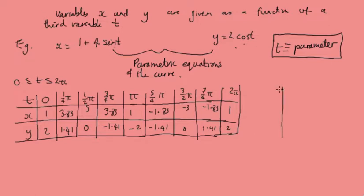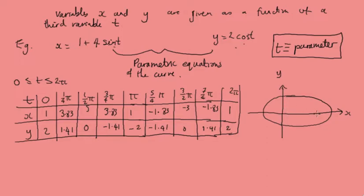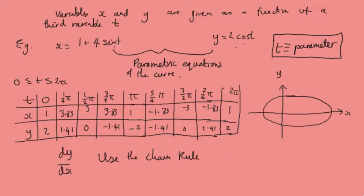Then you would have some proper graph paper and you would plot your values for x and y. If you were to do that, you would find you'd get an ellipse. That's how you would deal with these parametric equations. But what if we wanted to find the derivative dy/dx? What we can do is use the chain rule and differentiate each with respect to t, and then we can find the derivative with respect to x. The best way to show this is with an example.